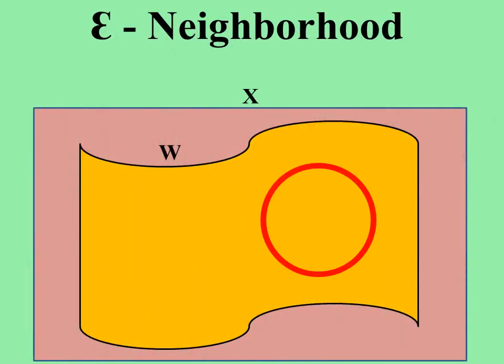Here, the open ball is of smallest radius value epsilon and center point e. The subset W is a neighborhood of e. So this is said to be an epsilon neighborhood of a point e.